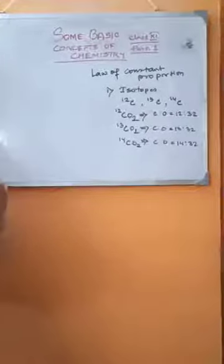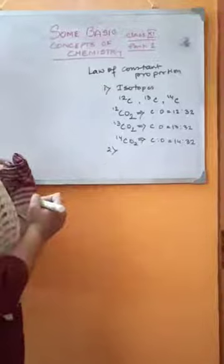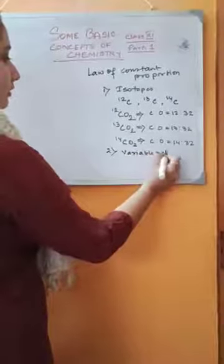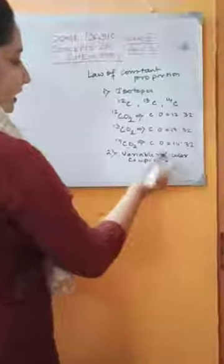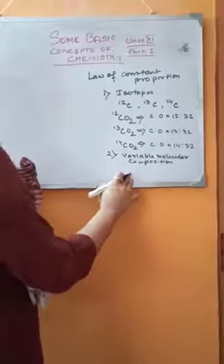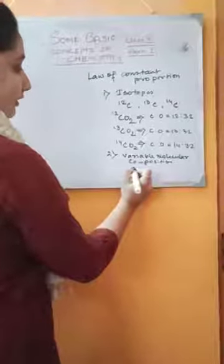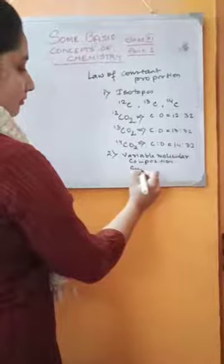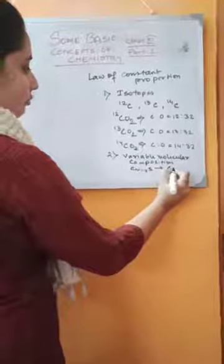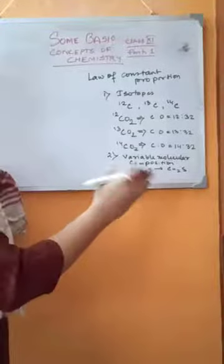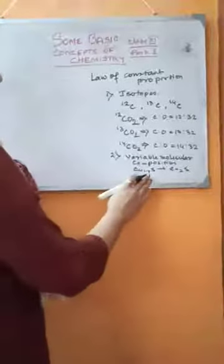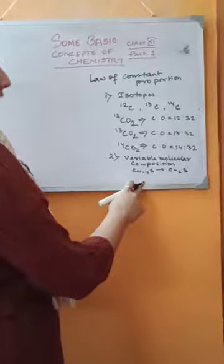The second limitation is that there are certain compounds having variable molecular composition. Copper sulfide, for instance, can vary in formula. Titanium oxide also has variable molecular composition. These types of compounds are known as non-stoichiometric compounds. For such compounds, the law of constant proportion is not applicable because the proportion constantly changes.